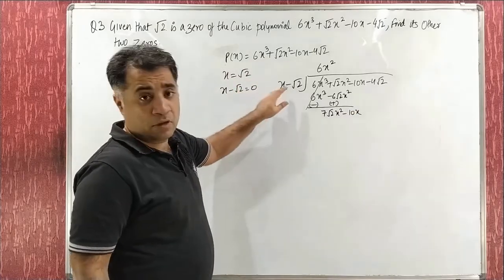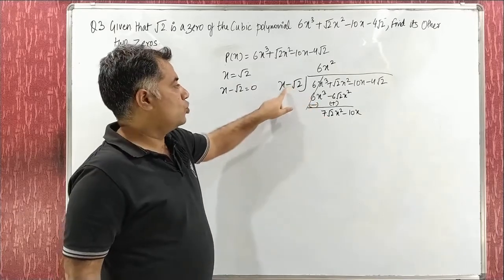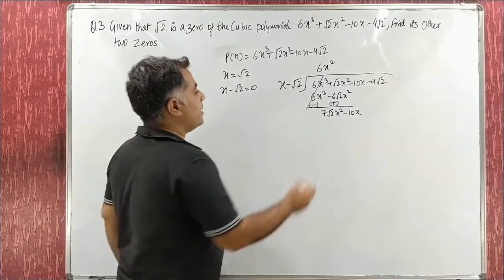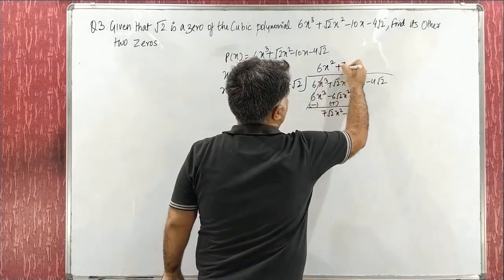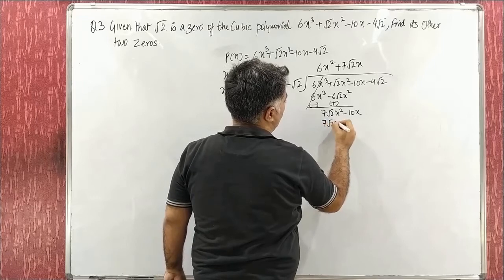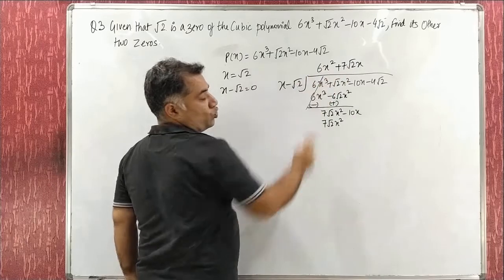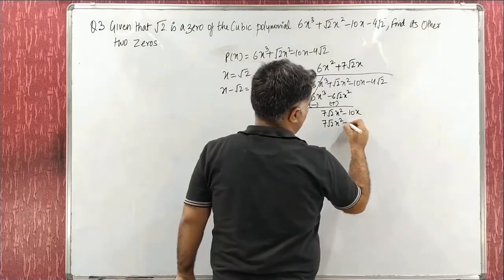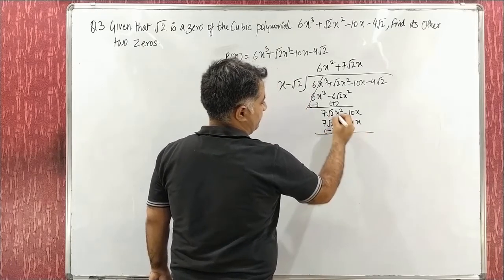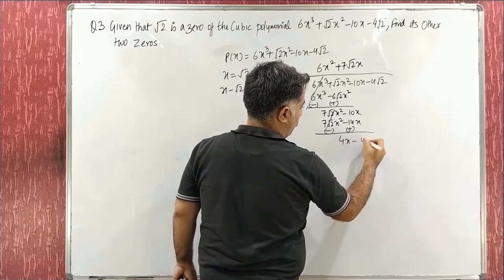The coefficient of x² is 7√2, positive 7√2. Now multiply by 7√2x. This gives 7√2x². And 7 × 2 = 14, root2 × root2 = 2, so 7 × 2 = 14. This gives −14x. Change signs: negative, positive. We get 4x − 4√2.